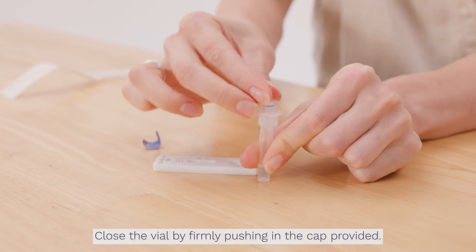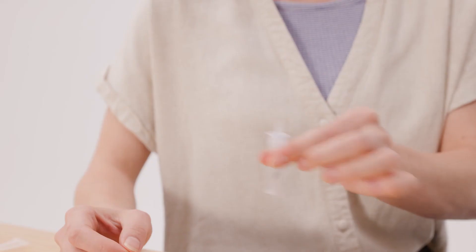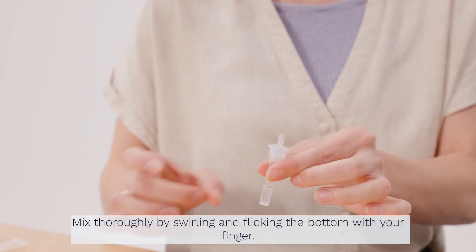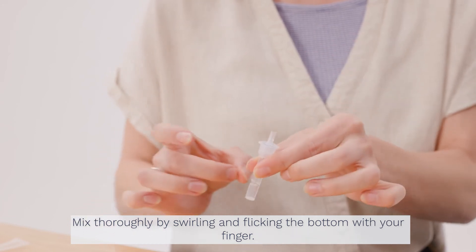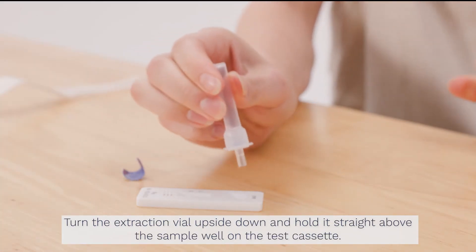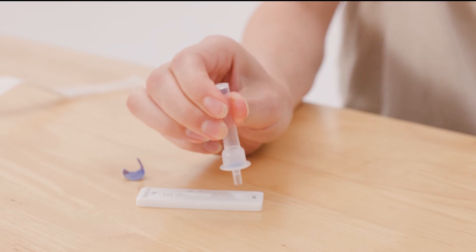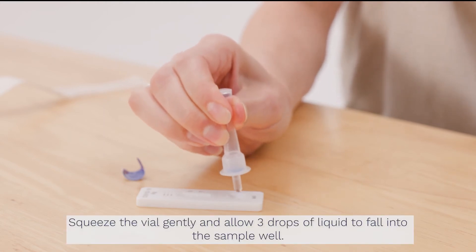Close the vial by firmly pushing in the cap provided. Mix thoroughly by swirling and flicking the bottom with your finger. Turn the extraction vial upside down and hold it straight above the sample well on the test cassette. Squeeze the vial gently and allow 3 drops of liquid to fall into the sample well.